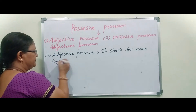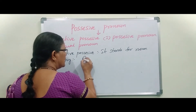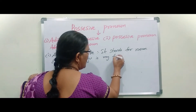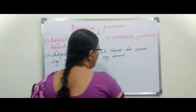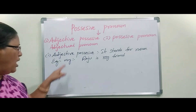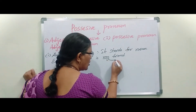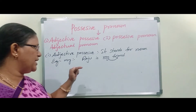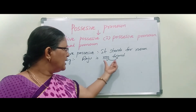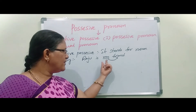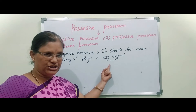Example: 'My.' Raju is my friend. Here, 'my' is giving information about 'friend.' Always, an adjective talks about a noun, and 'friend' is a noun here. That's why 'my' is an Adjectual Pronoun.